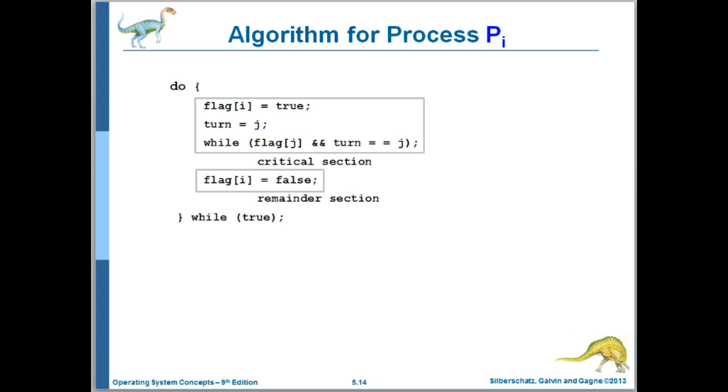Let's look at progress now. So suppose that pi is in its entry section, and pj is in its remainder section. So i sets its flag true, sets turn to j, but then that doesn't matter, because j's flag will be false, so pi will enter its critical section immediately.